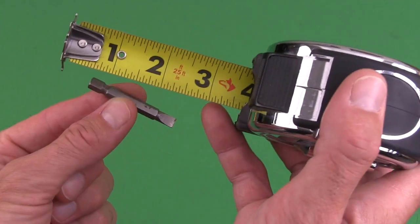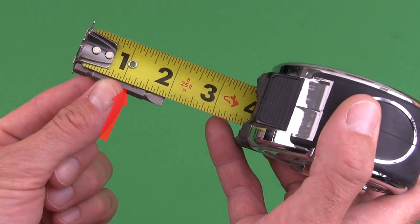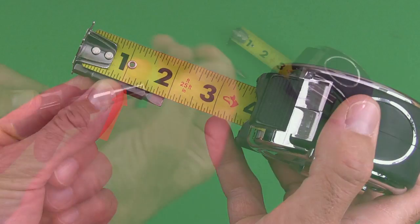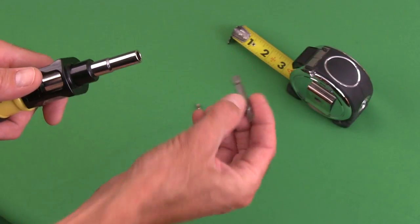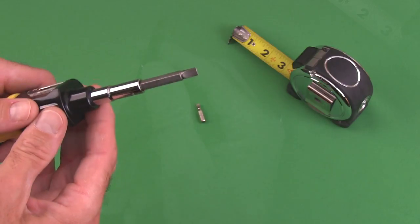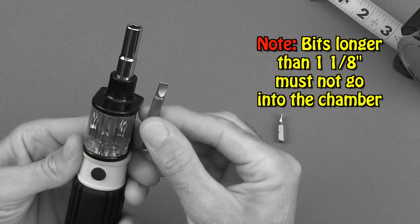Note, if your existing bit is longer than one and one-eighth inch, you can still use it with the Bit360 screwdriver, but you will not be able to rotate the chamber with this bit inside.